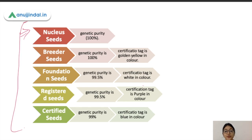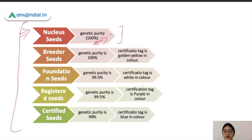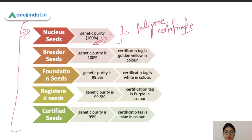Nuclear seeds must maintain 100% genetic purity — all progeny traits must match the mother seed. For nuclear seeds, there is no specific color certification tag; instead, the breeder issues a pedigree certificate. Breeder seeds are developed from nuclear seeds and must also maintain 100% genetic purity. The certification tag for breeder seeds is golden yellow in color. Foundation seeds are developed from breeder seeds and must maintain 99.5% genetic purity; their certification tag is white.